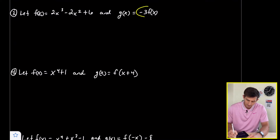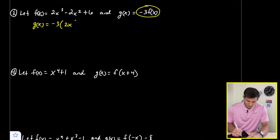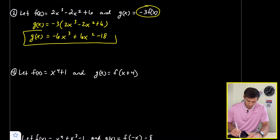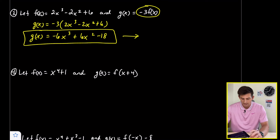So g of x equals negative 3 times f of x, which is negative 3 times the quantity 2x cubed minus 2x squared plus 6. Distributing gives us negative 6x cubed plus 6x squared minus 18. That would be our transformed polynomial, and we had two transformations take place.